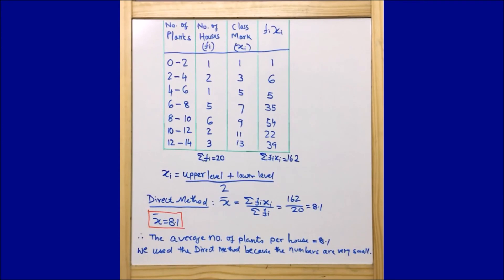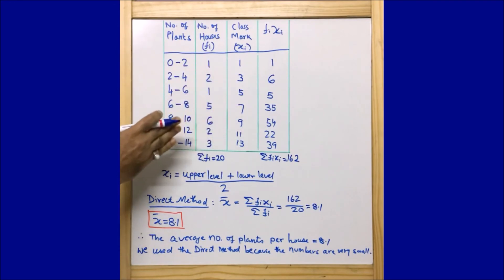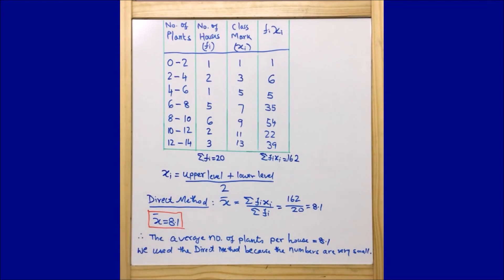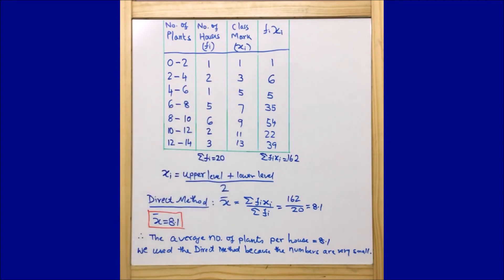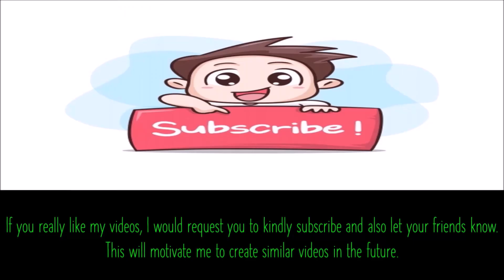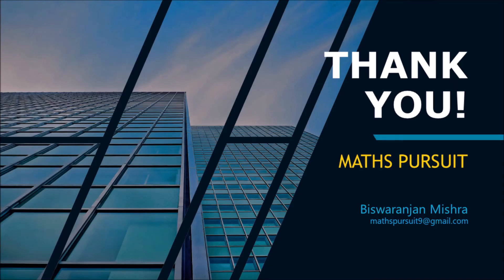This process is very simple and easy. We just need to draw the table, put the data in tabular form, and find the result. The only thing to decide is which method to follow. The direct method is the best and simplest method when the values are small. Hope you understood — if you like my videos, please subscribe and share with your friends. Thank you, bye.